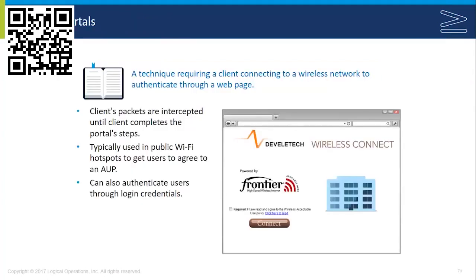A captive portal is a technique where a client connecting to a wireless network is directed to a web page before gaining access — common at hotels, airports, and coffee shops, but also increasingly used in corporations. It intercepts the client's packets until the client completes portal steps, which usually involves checking an acceptable use policy agreement. It can also require login credentials, such as an Active Directory username and password, in order to connect to the wireless network.